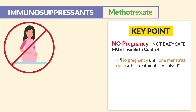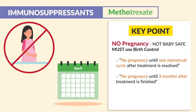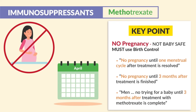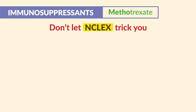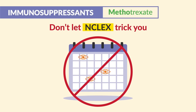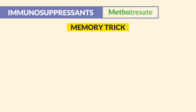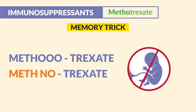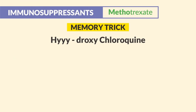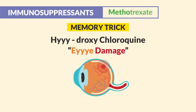Men should not try for a baby until three months after methotrexate treatment is complete. Don't be tricked — there's no need for frequent eye checkups since methotrexate is not eye toxic. Remember the differences: methotrexate means no babies, while hydroxychloroquine causes eye damage — that's how you know the difference between these two immunosuppressants.